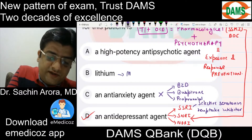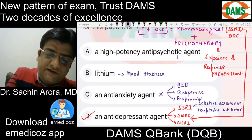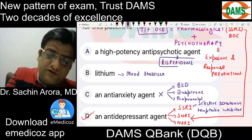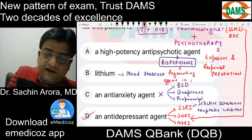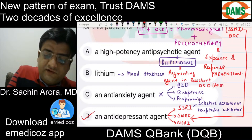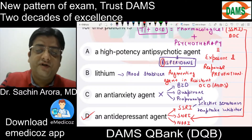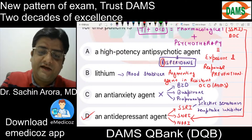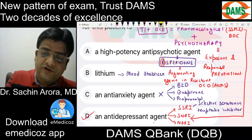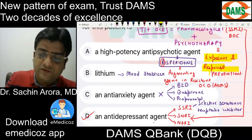Lithium is a mood stabilizer which does not have much of a role in OCD. A high-potency antipsychotic like risperidone is very well used in OCD and has been asked in the exam. It is an augmenting agent in resistant OCD — this question was asked in AIIMS. 'R' for resistant, 'R' for risperidone. Antipsychotic is very well used but in resistant OCD, not as the drug of choice.